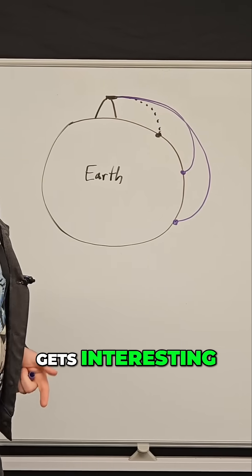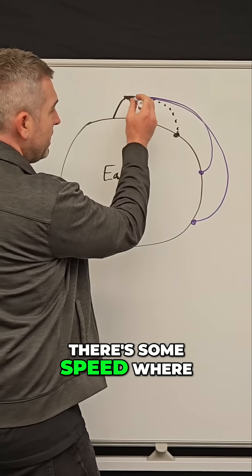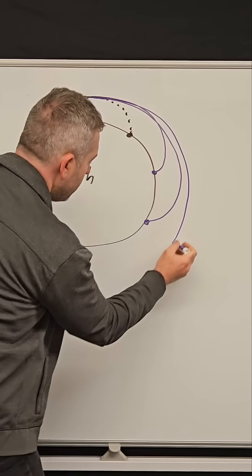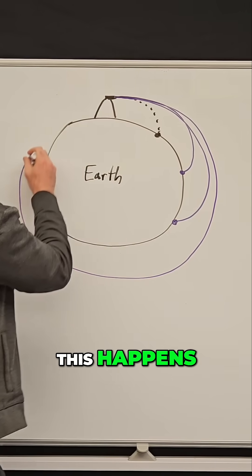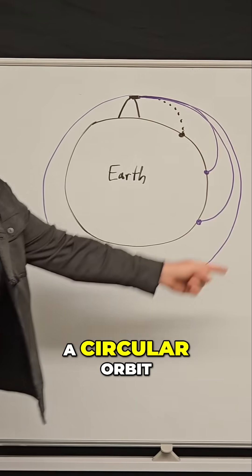But here's where it gets interesting. There's some speed where if you shoot it just fast enough, this happens, and it will maintain a circular orbit.